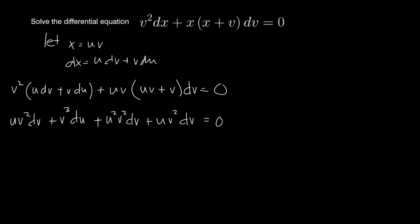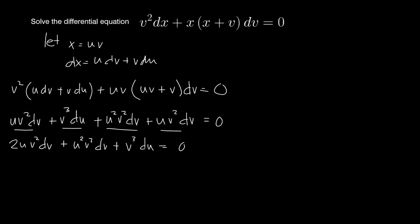Collecting like terms: the dv terms combine to give 2uv² dv + u²v² dv, and the du term is v³ du = 0. The first two terms share a common factor of uv², so factoring gives uv²(2 + u) dv + v³ du = 0.